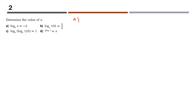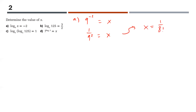The first step is always to convert the logarithm to an exponential. The base of the log becomes the base of the exponent. So 9 to the power of negative 2 equals x. Negative exponents are inconvenient, so we write it as 1 over 9 squared, which equals 1 over 81. So x equals 1 over 81.